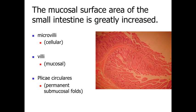The mucosal surface — the lining of our small intestine — is greatly increased at a variety of levels. At the cellular level, the simple columnar cells lining the epithelium within our small intestine have microvilli along their surface. These are non-motile structures with actin cores, increasing the surface area of the individual cells.